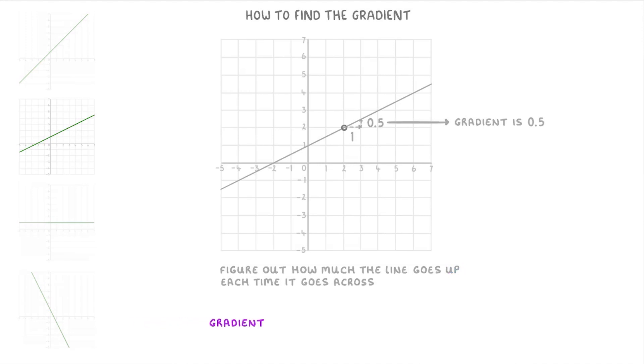Another way to think about the gradient is to use this equation here which says that the gradient is equal to the rise divided by the run. With the rise being how much the line has gone up by and the run being how much the line has gone across by.